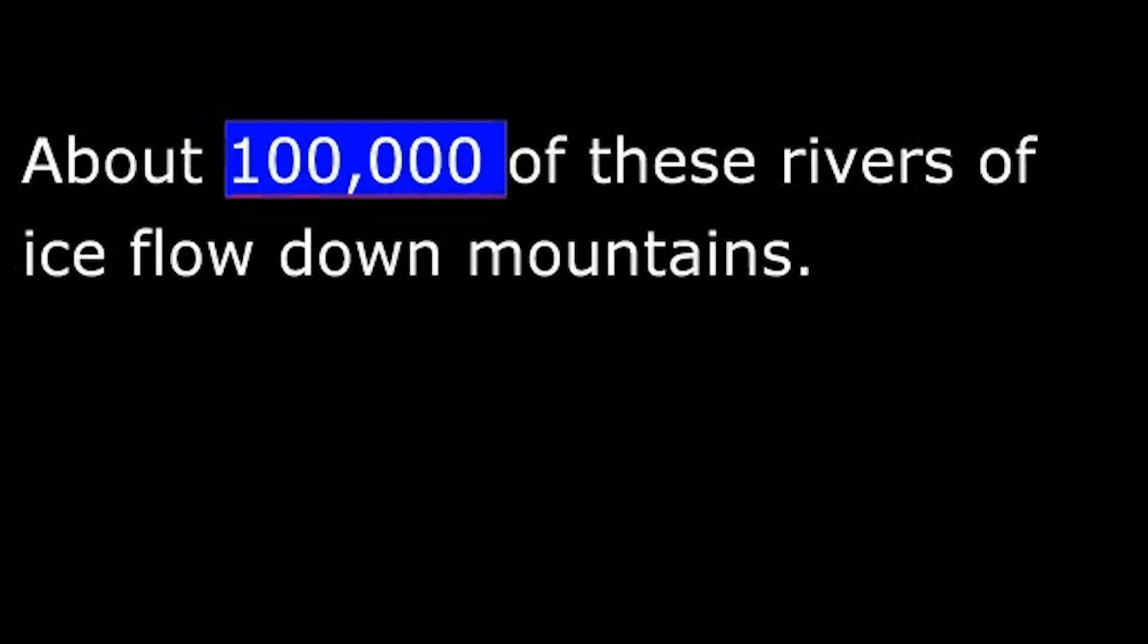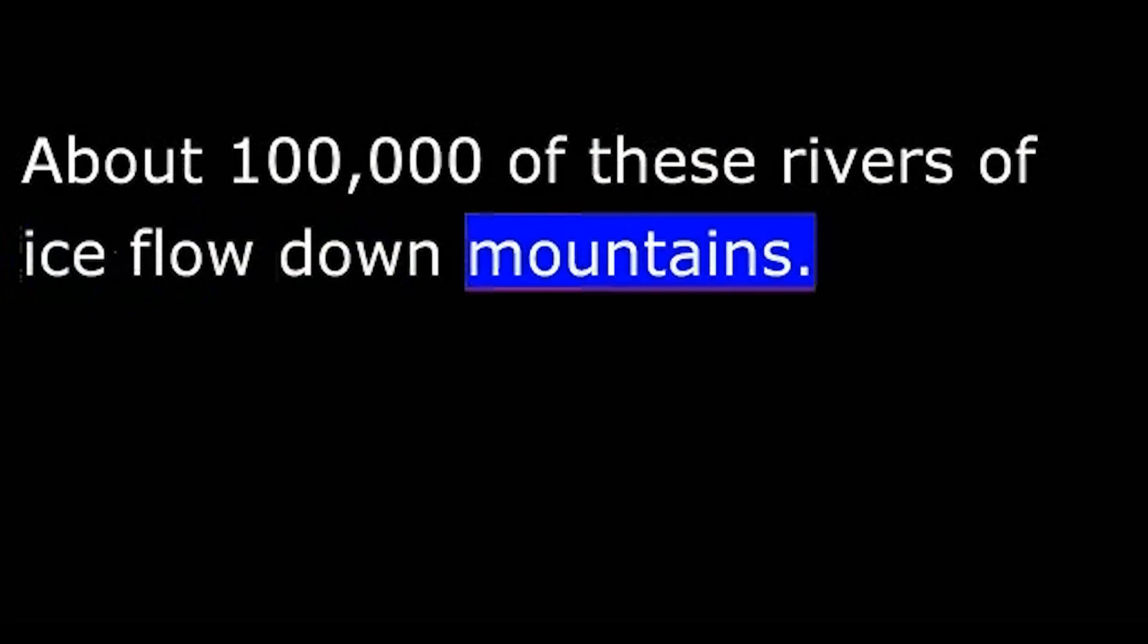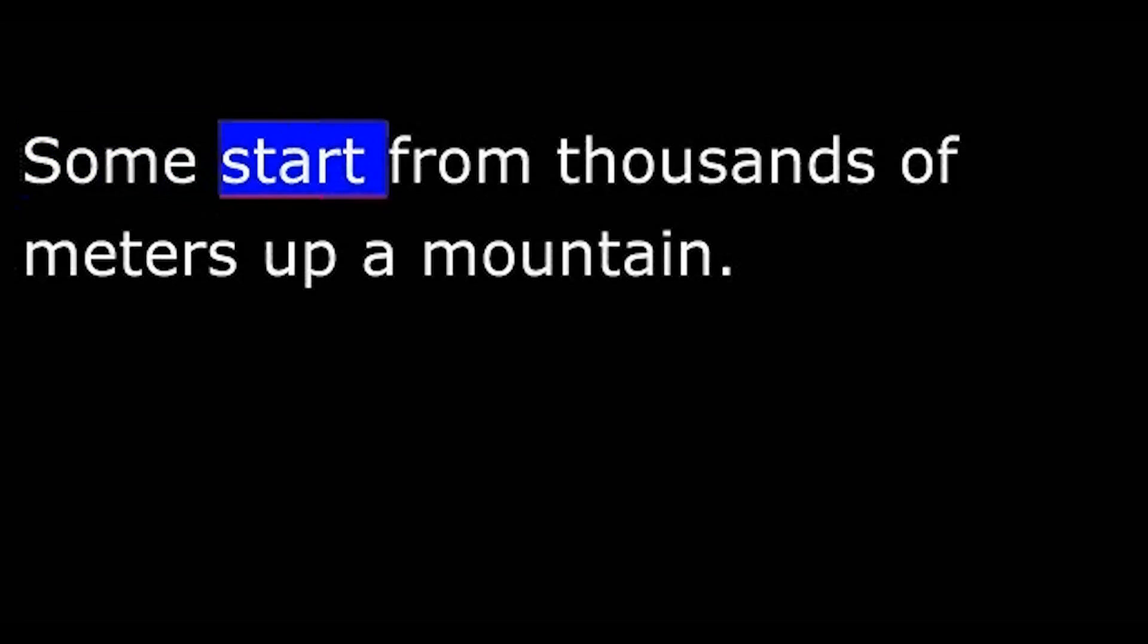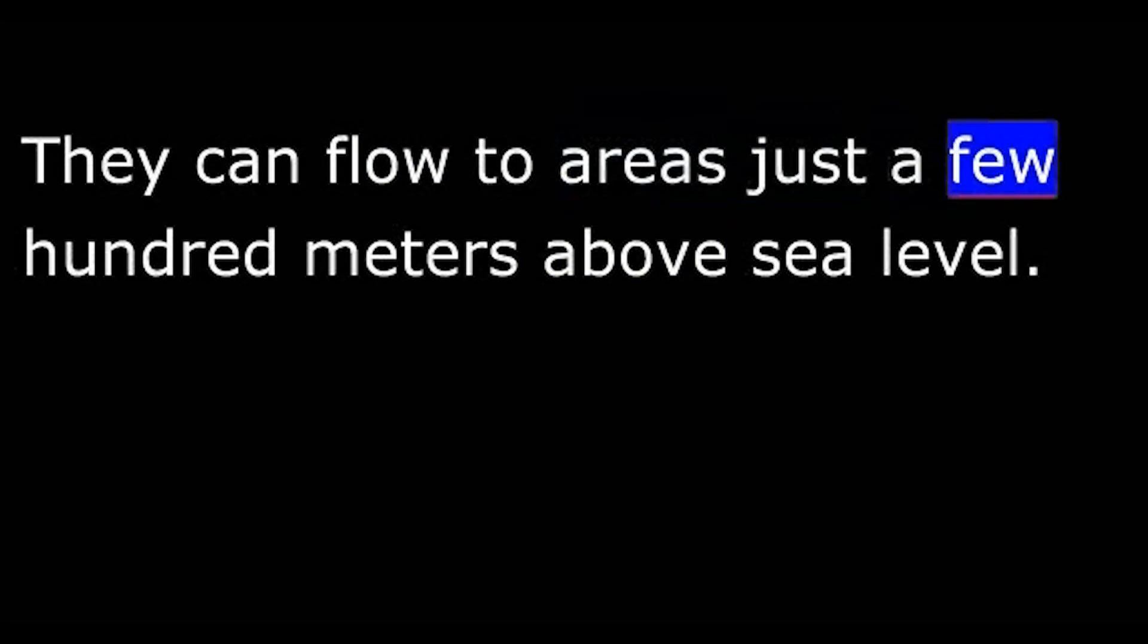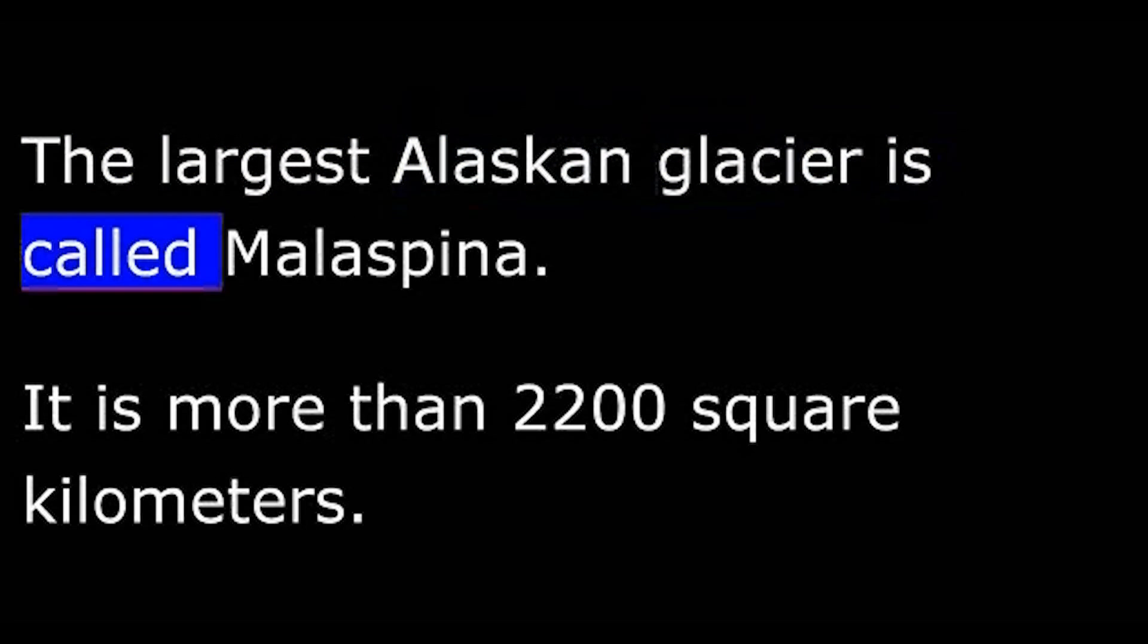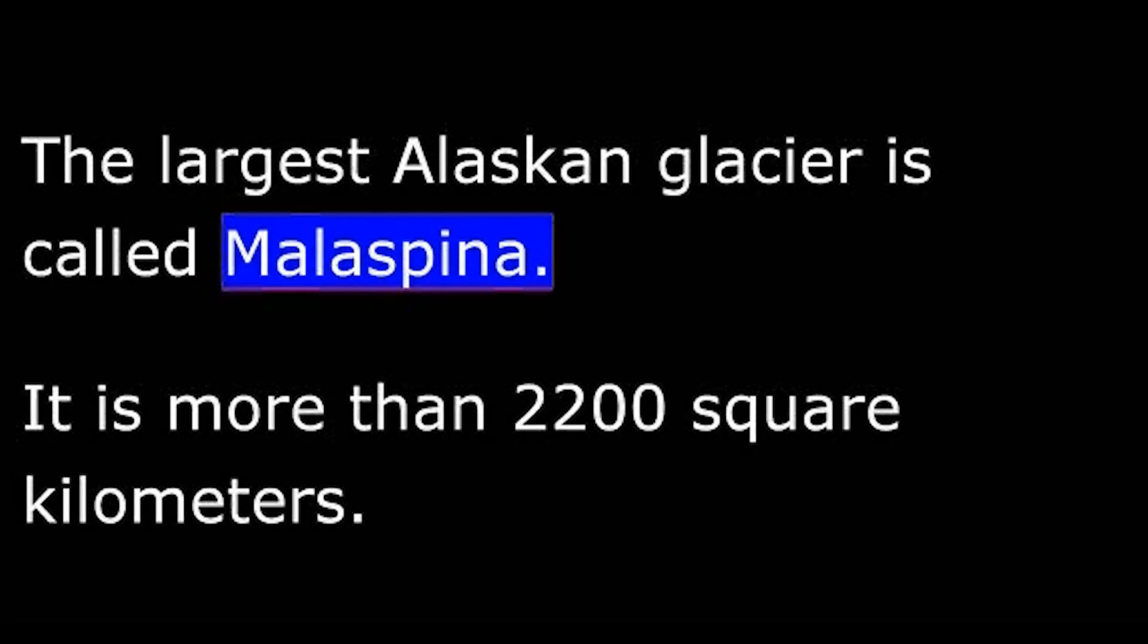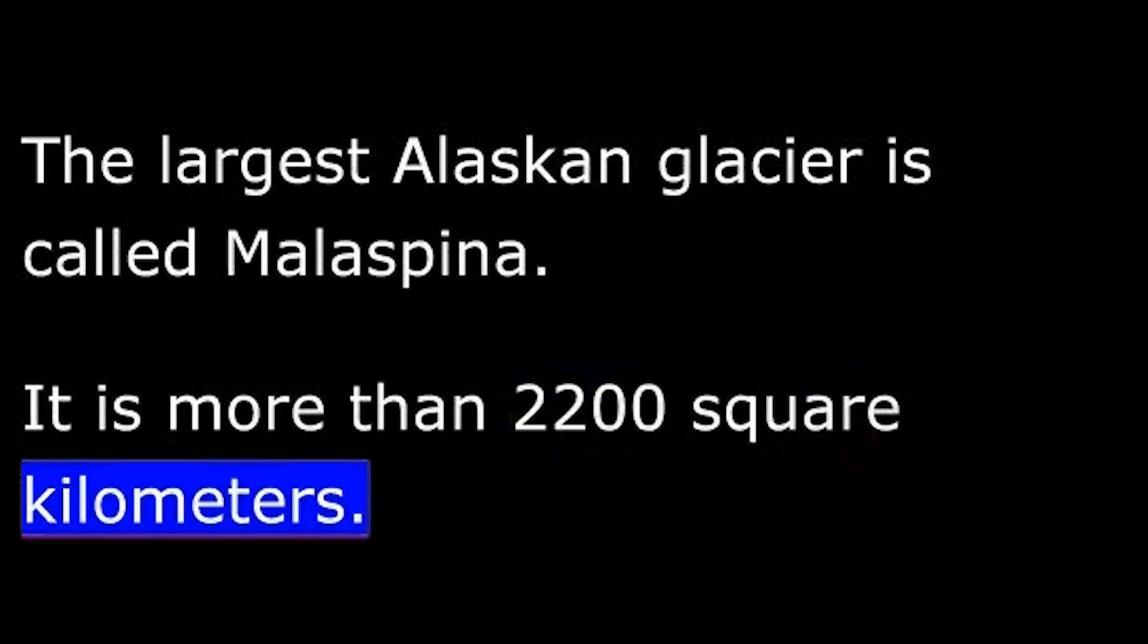About 100,000 of these rivers of ice flow down mountains. Some start from thousands of meters up a mountain. They can flow to areas just a few hundred meters above sea level. The largest Alaskan glacier is called Malaspina. It is more than 2,200 square kilometers.